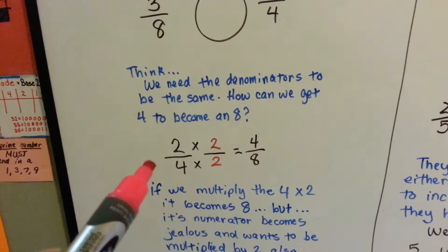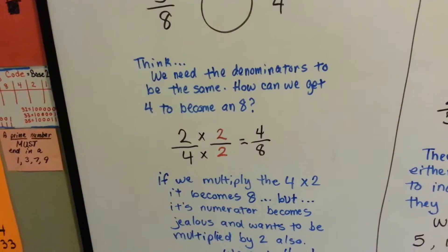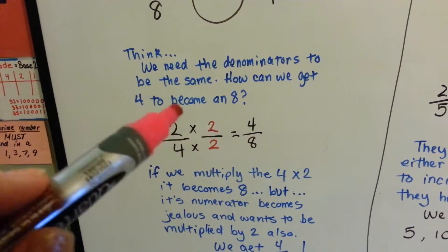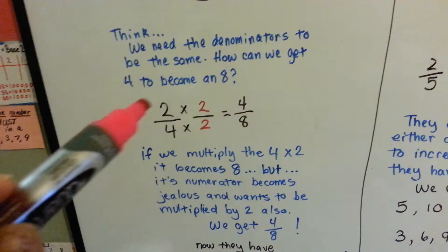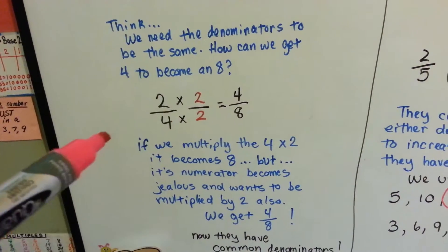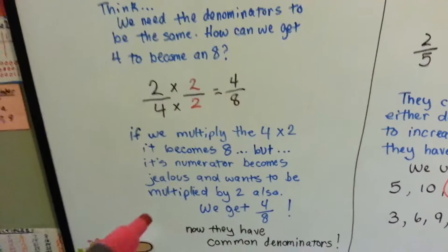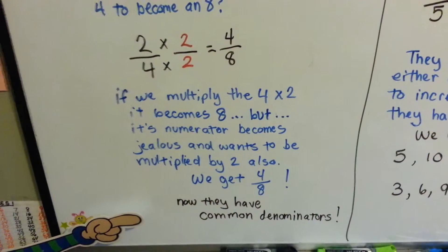If we multiply the 4 times 2, it becomes an 8. But its numerator becomes jealous, and it wants to be multiplied by 2 also. So we multiply the numerator by 2, and we get 4 eighths. Now, they have common denominators.